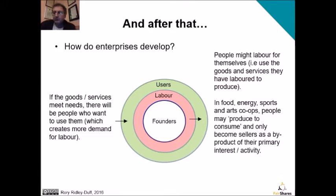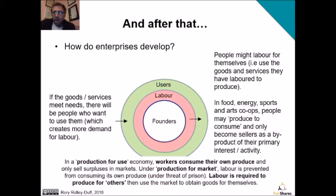Similarly, in sports clubs and theatre co-ops, you're consciously creating the sports or theatre environment, but you might also buy tickets to see what you've produced. So there's a difference between production for use and production for market. In a production-for-use economy, workers consume their own produce and only sell surpluses. But under production for market, people are prevented from consuming their own produce — if you were to take something from work, you might be reported to the police. So under production for market, labour is required to produce for others, and then with their wages they go back to the market to get goods for themselves.